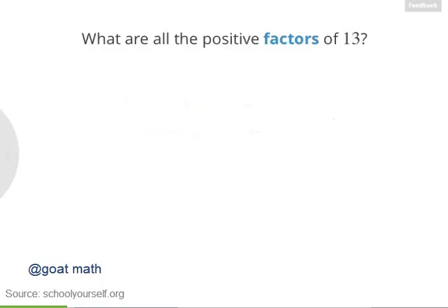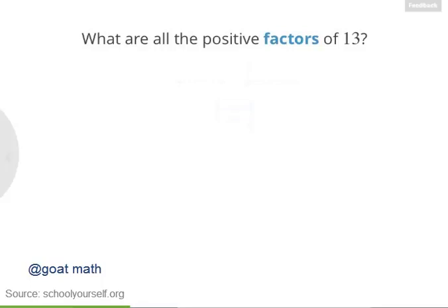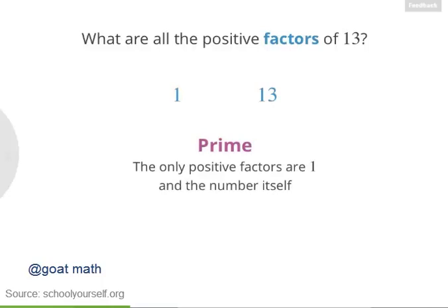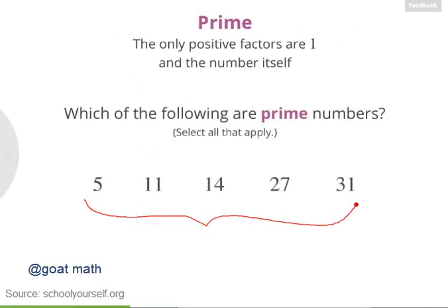Next, try identifying all the positive factors of 13. Right, so the only 2 factors of 13 are 1 and 13. Numbers like 13 get a special name — they're called prime. A prime is a number whose only positive factors are 1 and the number itself. So next, take a look at these numbers down here. Which of these are prime?